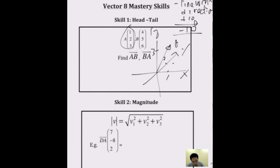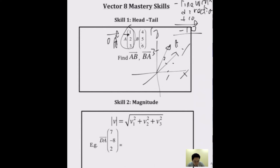In exam questions, whenever you see vector A, it means from O to A. Vector B means from O to B. The IB exam will typically ask you to find vectors AB and BA.